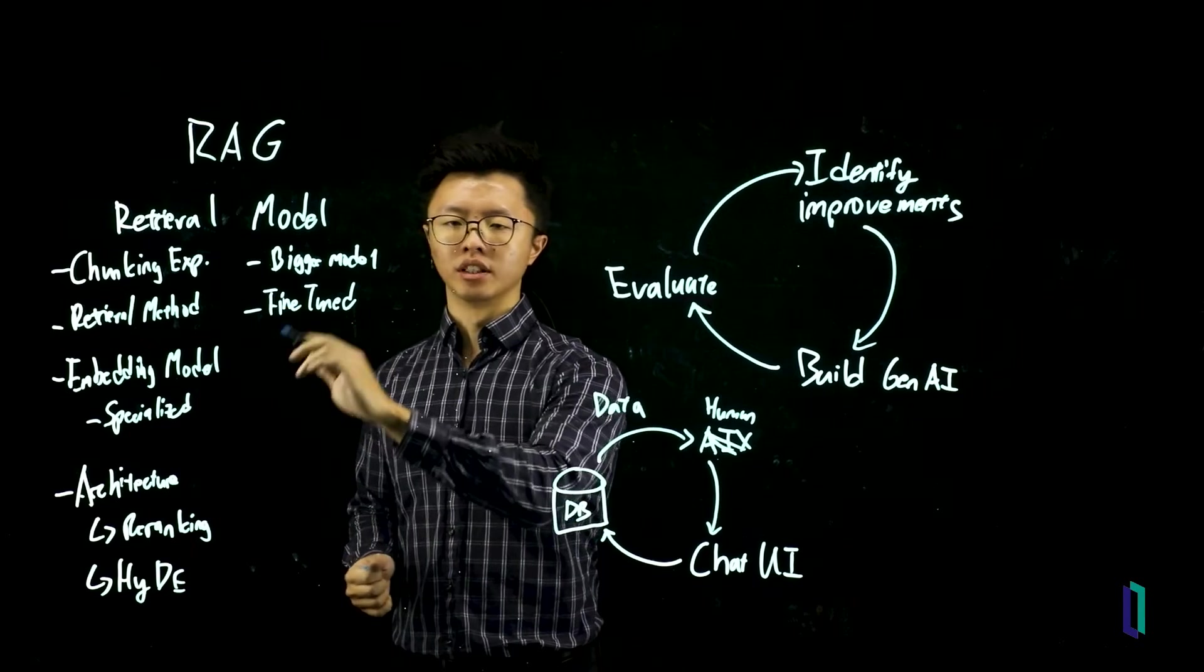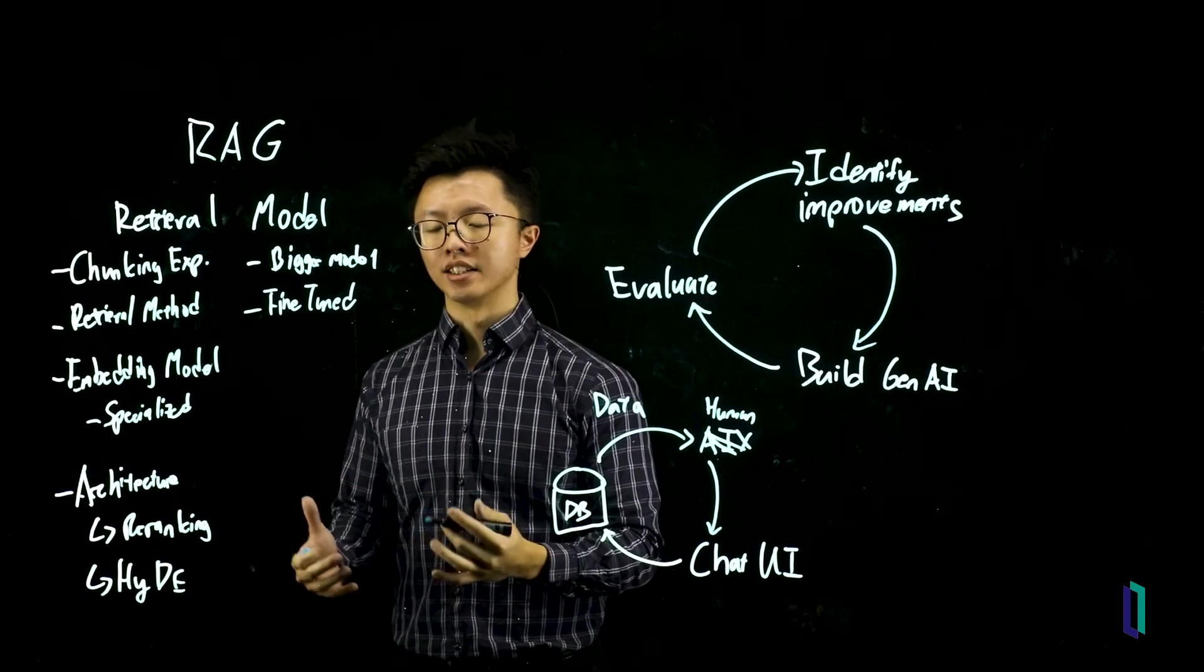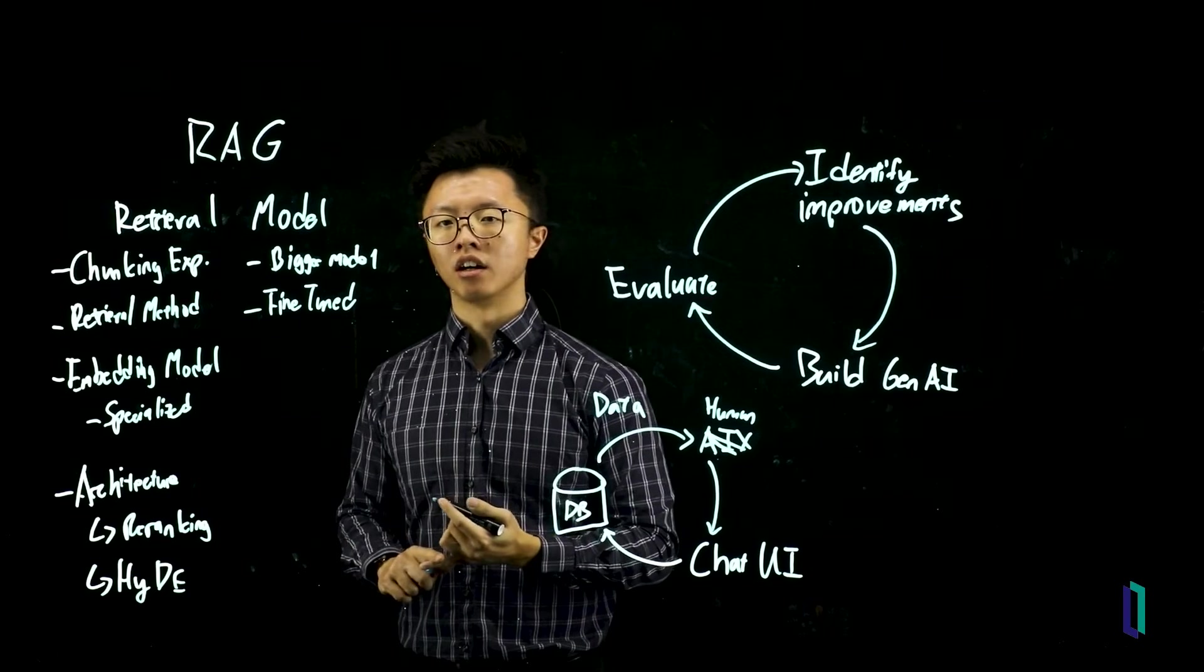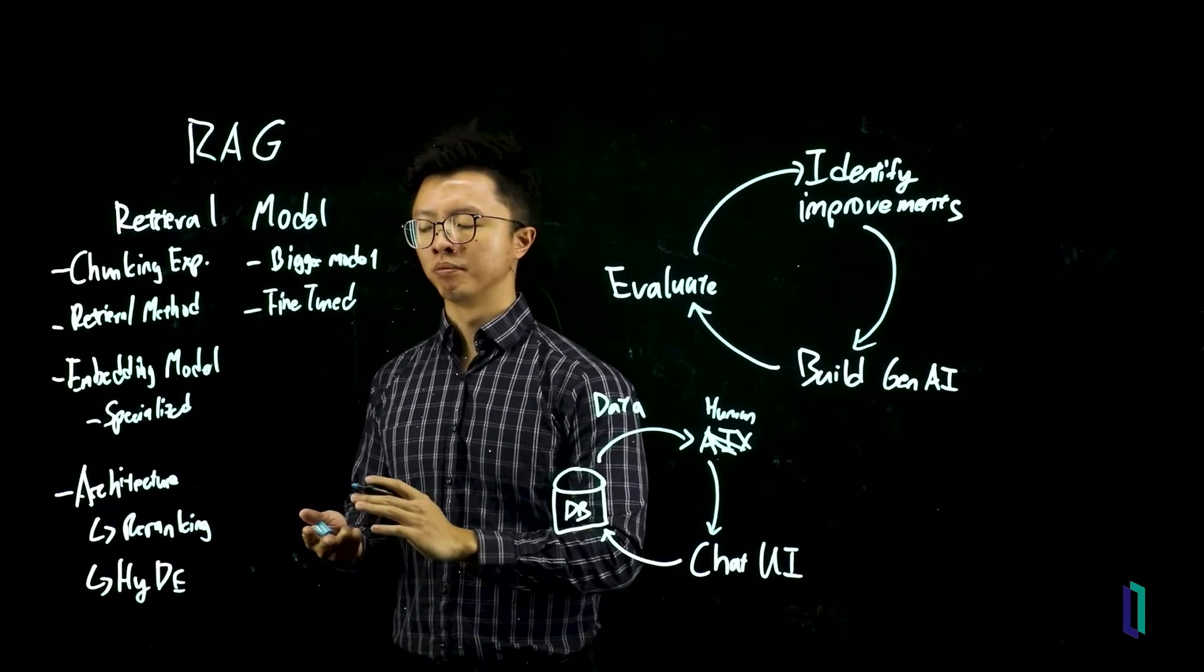But the most important thing here is to first understand what is wrong with your system. Is it retrieval or is it a model? And then what's wrong with the data? Is it not enough? Is it not relevant? Or is it just insufficient?